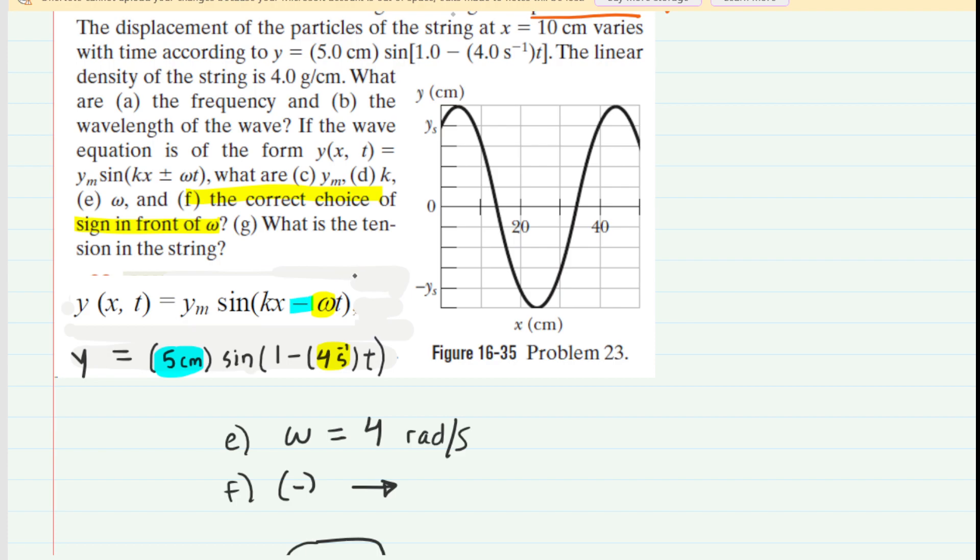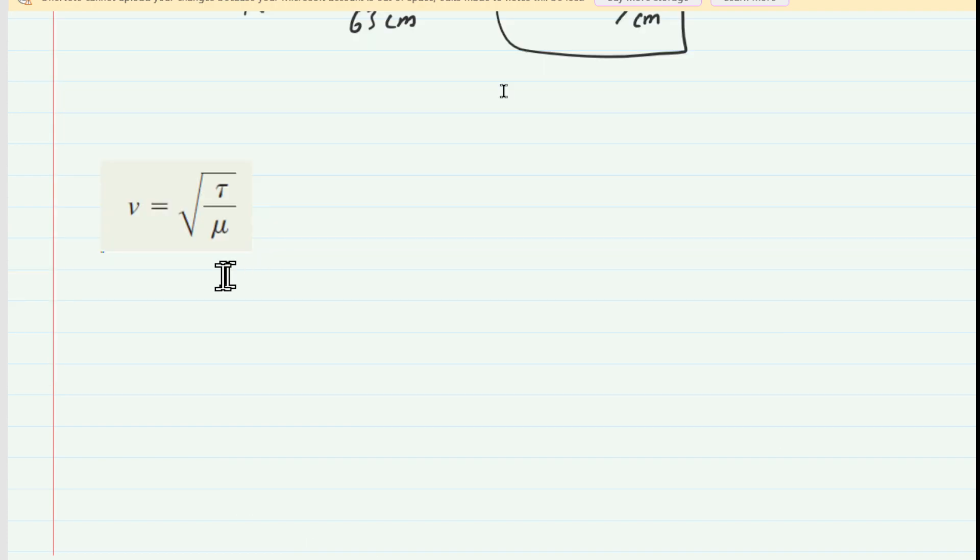Now we can cap this off with part g, which asks us to find the tension in the string. For a wave on a string, the speed of that wave is governed by this equation. We're looking for the tension, which is this tau value right here. So what we're going to do is square both sides of this equation. We get v squared is equal to tau over mu, and then multiply both sides of the equation by mu. So you would get mu times the speed squared is equal to the tension tau.